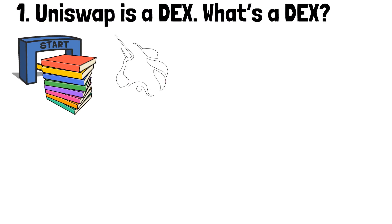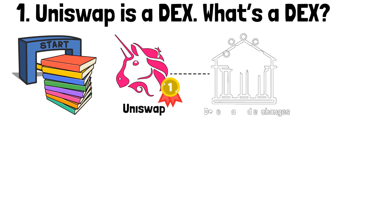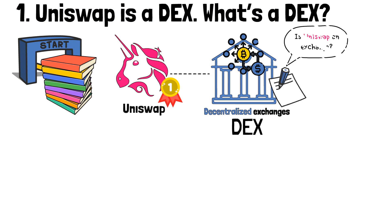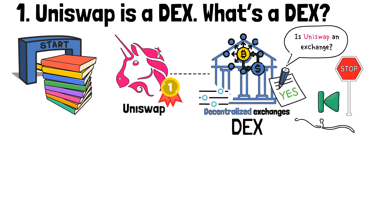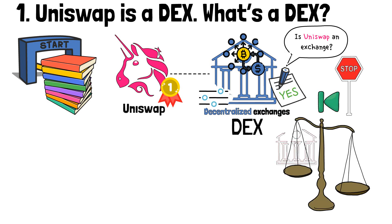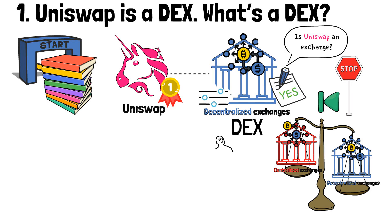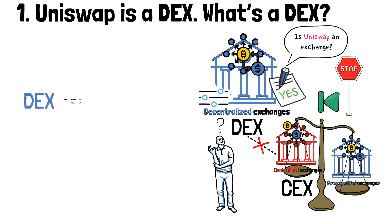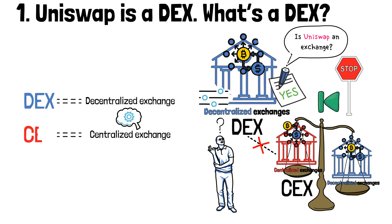To kick it off, let's lay the foundation. Uniswap is a prime example of a decentralized exchange, or simply a DEX. So the answer to the question "is Uniswap an exchange" is yes — but a certain type of it. We can't go further into this topic without explaining how exchanges differ in general. So what does a DEX mean, and how is it different from a centralized exchange, or a CEX? A DEX represents a rather radical departure from the conventional centralized exchanges, often referred to as CEXs.